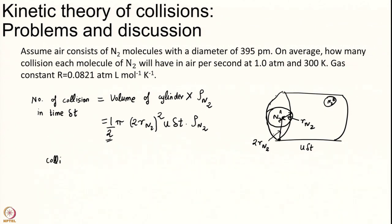Collisions per unit time will simply be half 4 pi R N2 square and this U in collision theory we replace by the average speed, average thermal speed. We are going to calculate all of these quantities one by one and multiply them together.